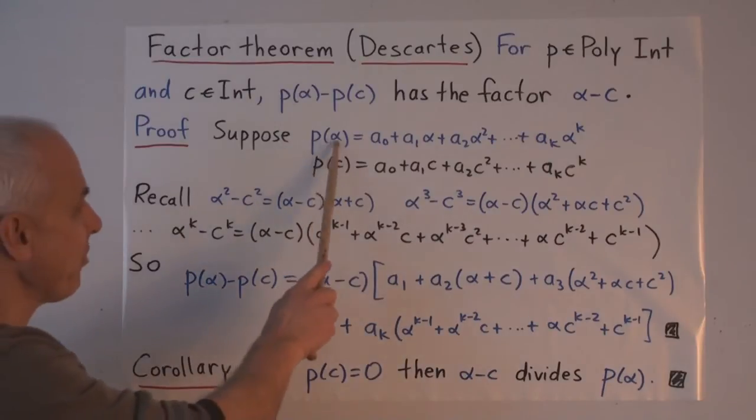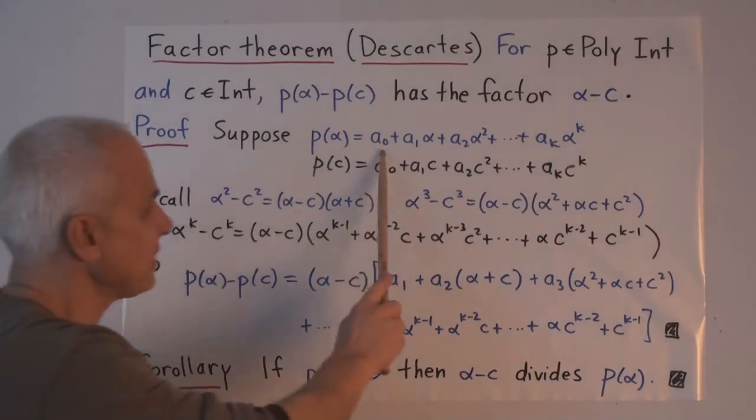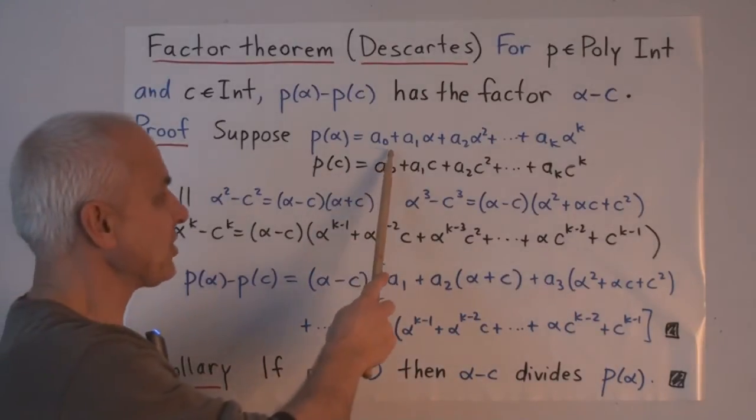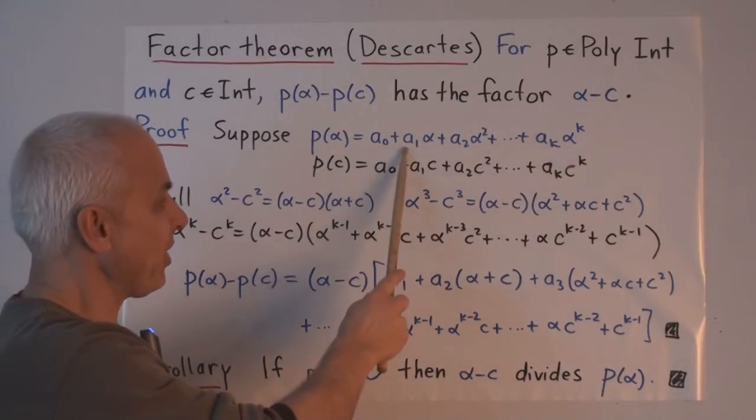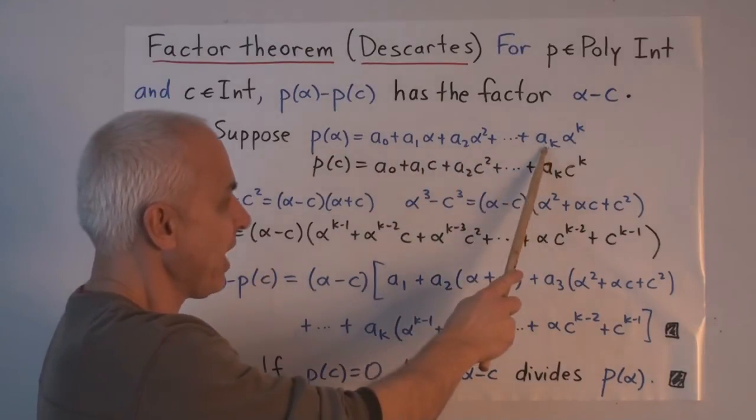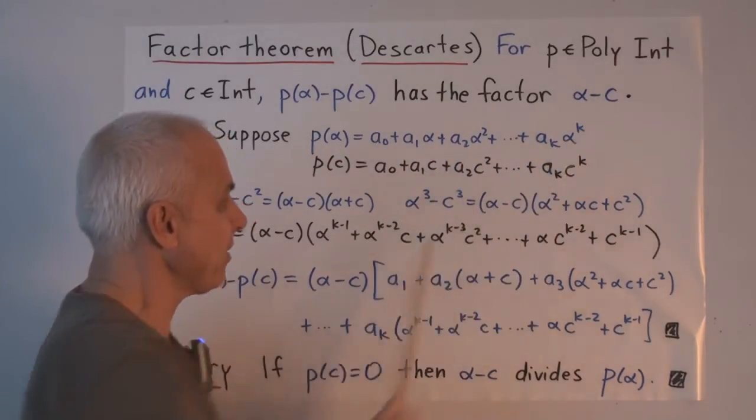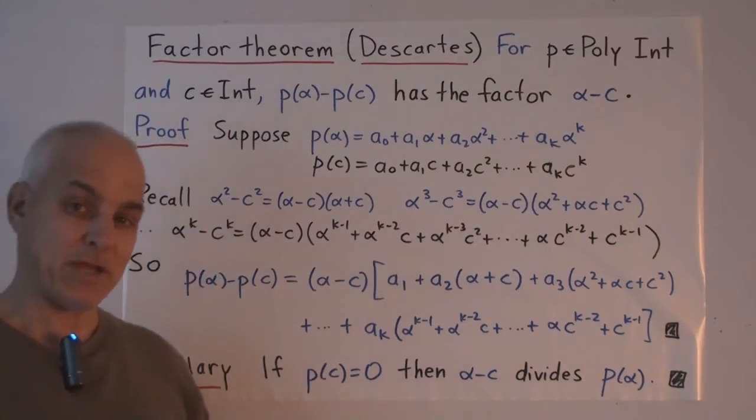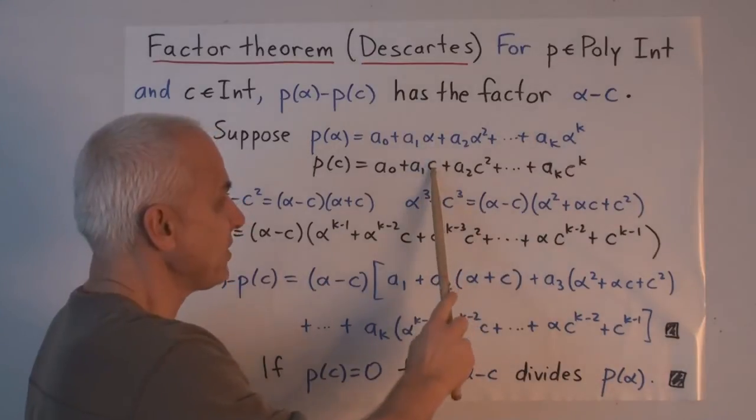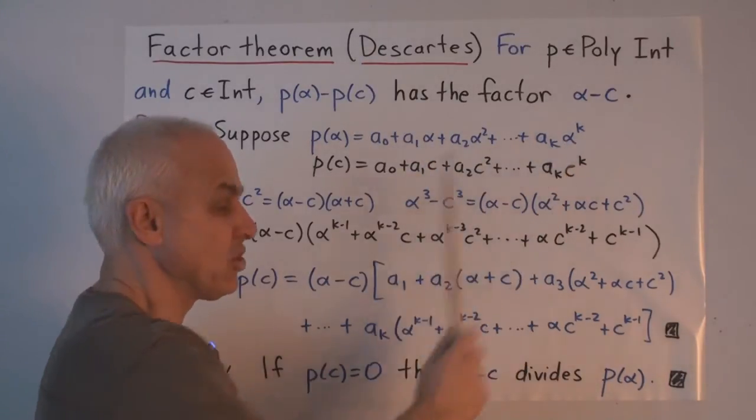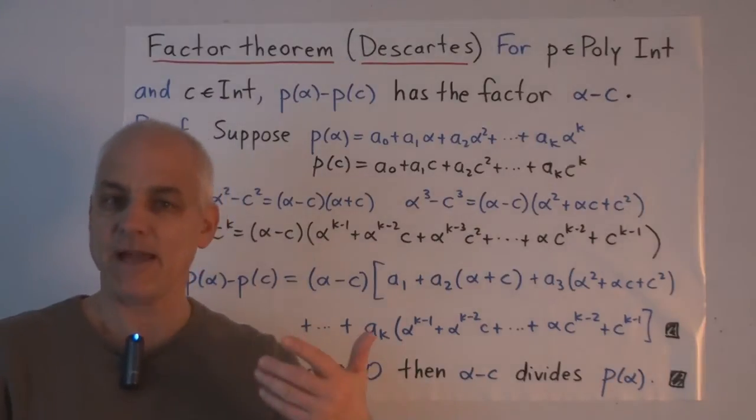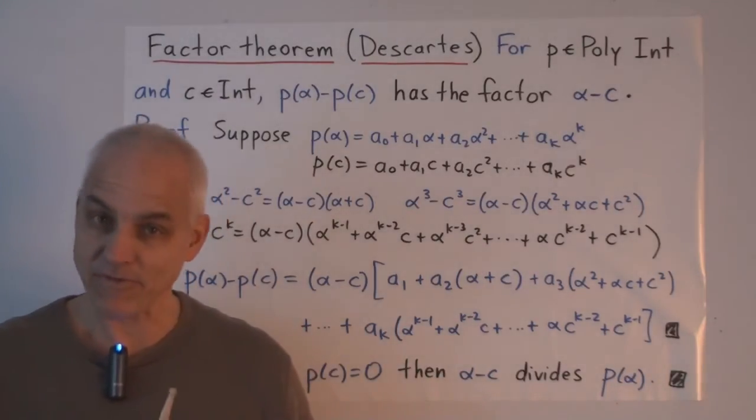So here's our poly number P. P of alpha is written in standard alpha form, but in our somewhat relaxed notation now, has a0 plus a1 alpha plus a2 alpha squared up to a sub K alpha to the K. And if we evaluate P at C, we get the corresponding expression with alphas replaced by the integer C.